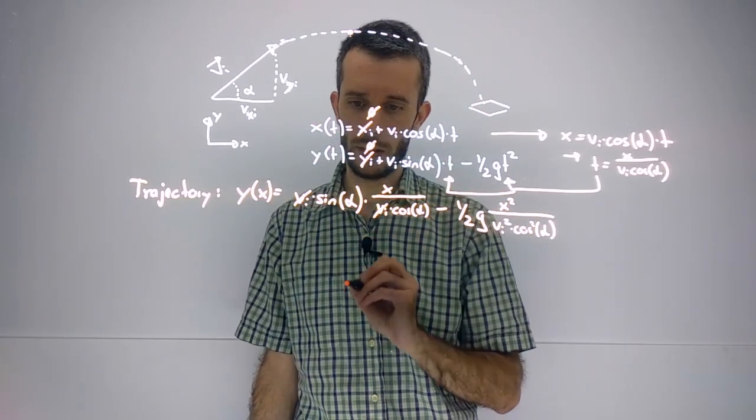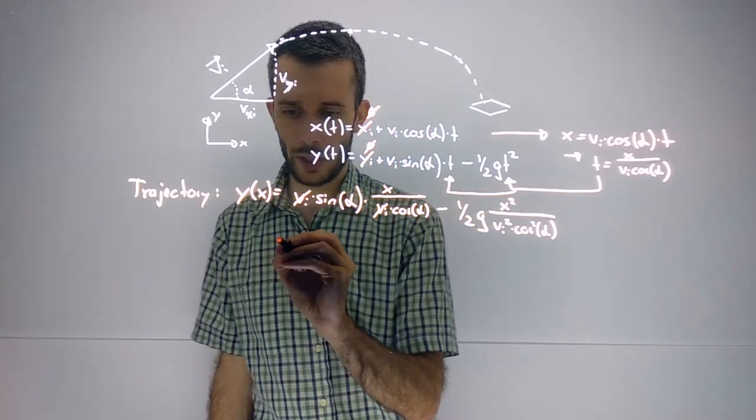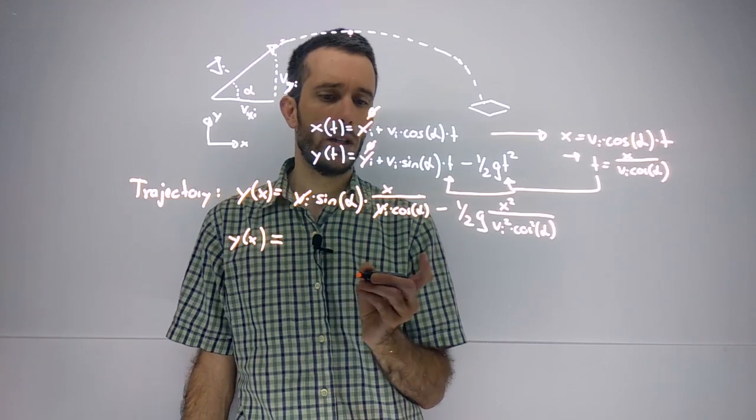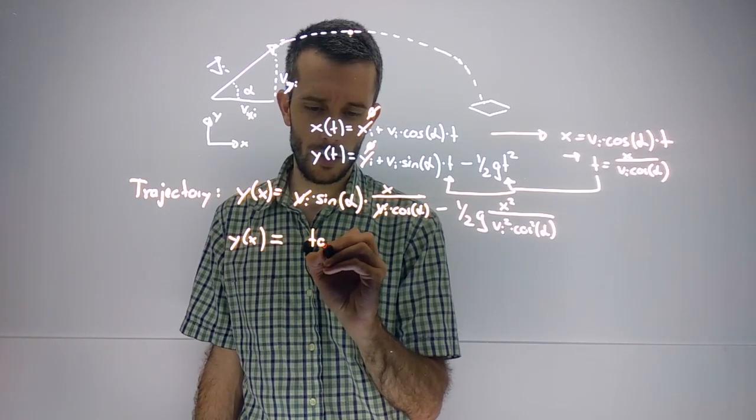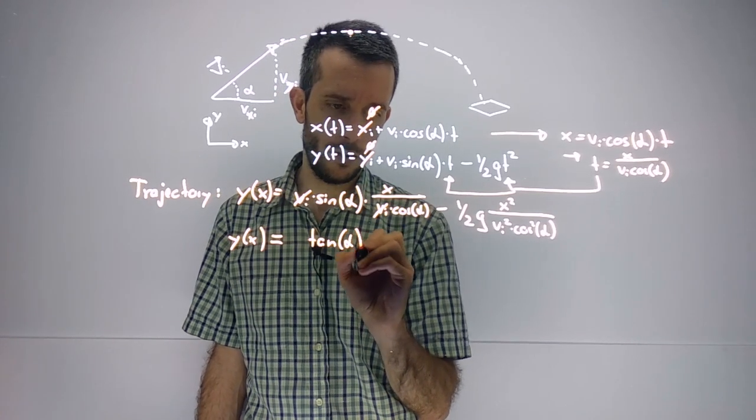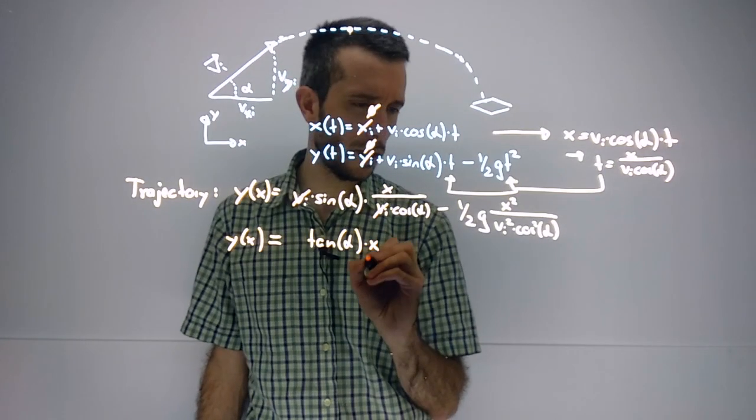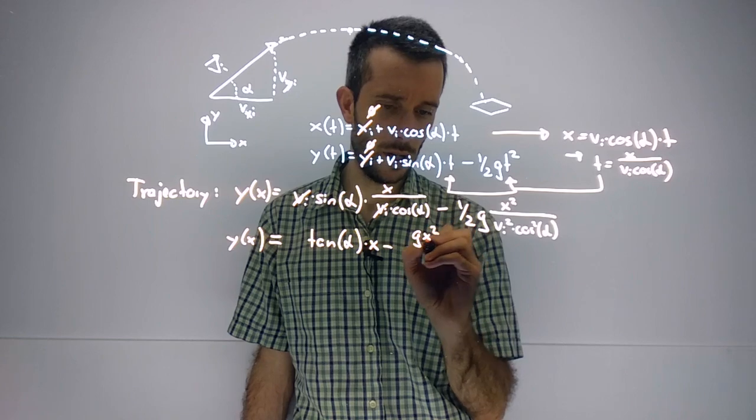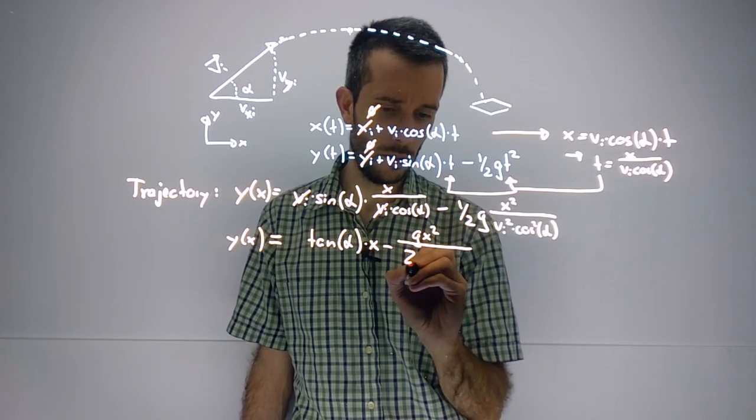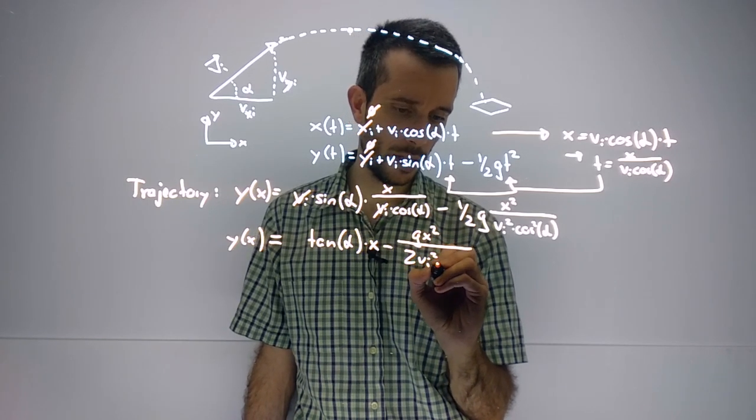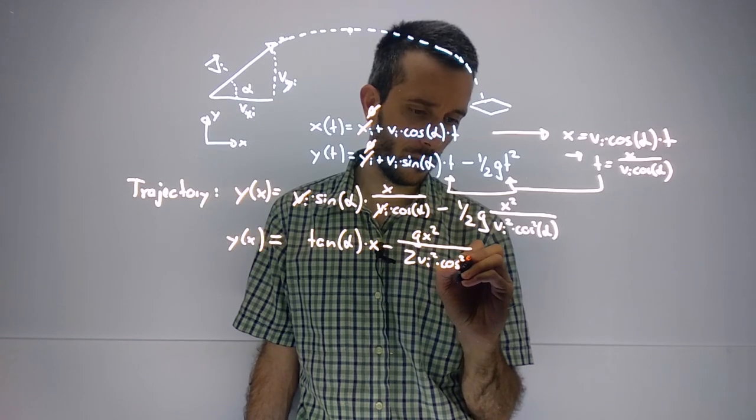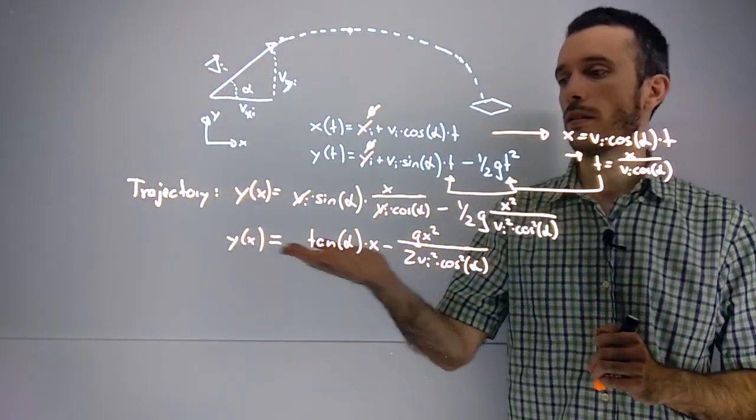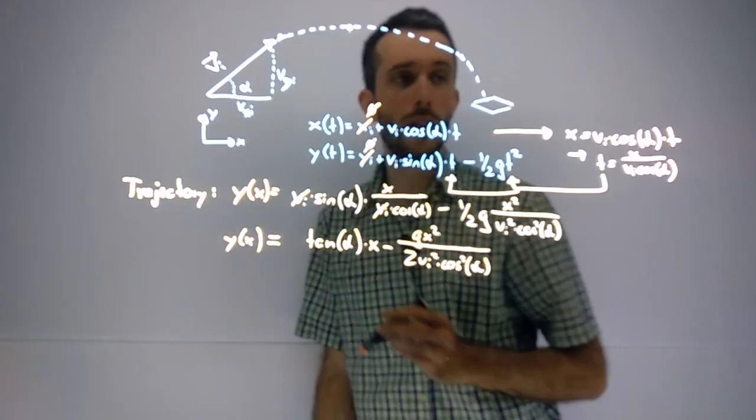V1 cancels V1, so I can rewrite this as y as a function of x is tan(α) times x minus gx² over 2v_initial² times cos²(α). And this is my trajectory equation.